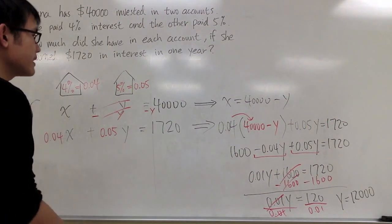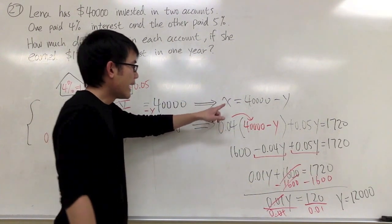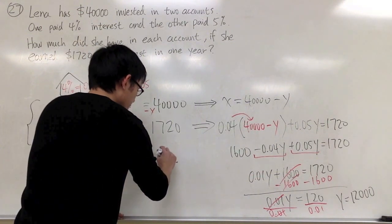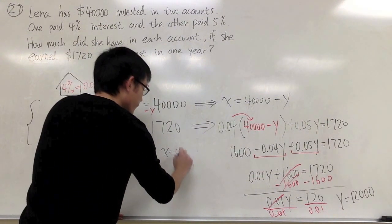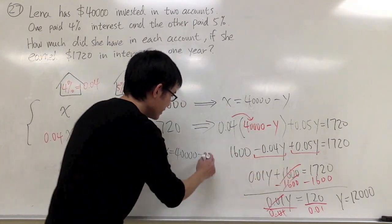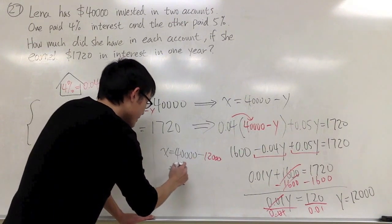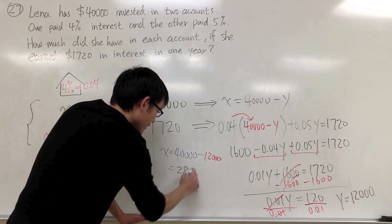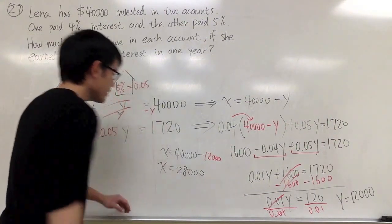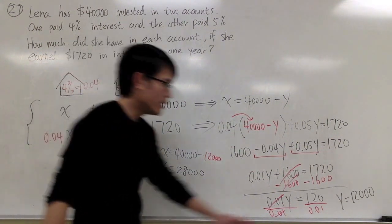Then the second thing that we have to do to finish this up is I also have to solve for x. I know x is equal to 40,000 minus y. So I'll just say right here, x is equal to 40,000 minus y, which we found out is 12,000. So of course, after we subtract, we will get x is equal to 28,000. So you see that we have the x right here, and then y is right here.